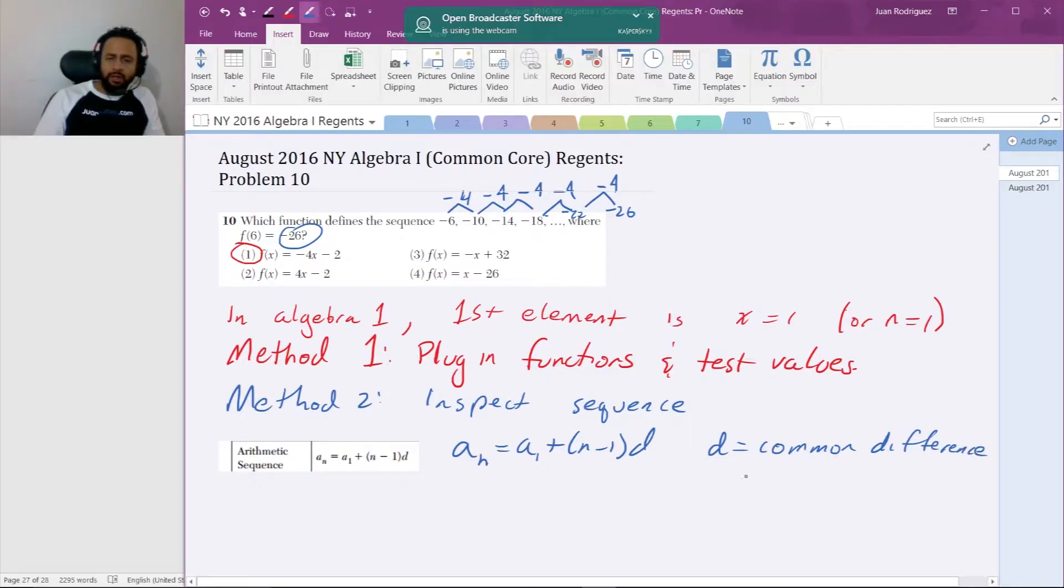Which is negative 4. And a_1 is the first element, which in this case is negative 6. This is d, this is a_1.